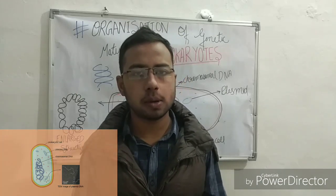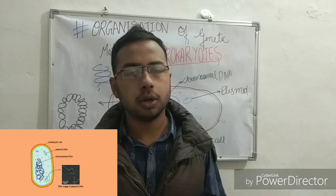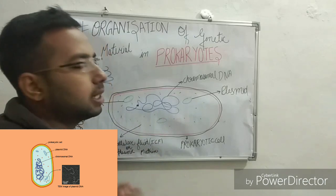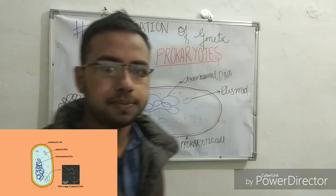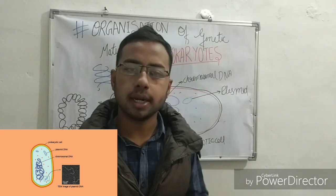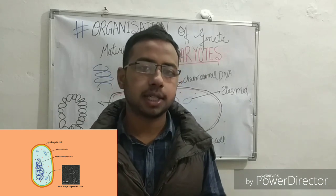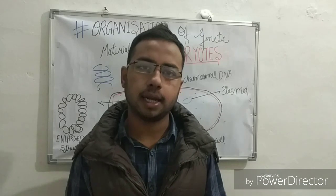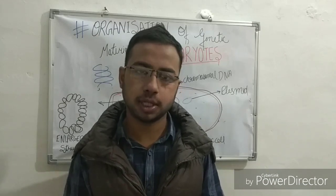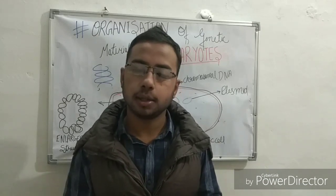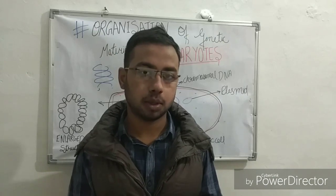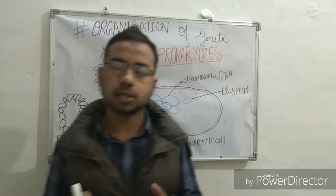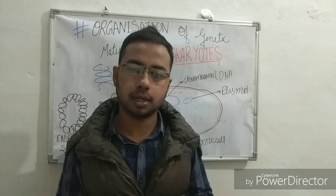Let's talk about the chemical structure of the nucleoid. The nucleoid is the region of the cell in which the DNA or genetic material is present along with some accessory proteins. The nucleoid contains 60% DNA, along with a small amount of RNA and proteins. These nucleoid proteins help the DNA in maintaining its supercoiled structure.